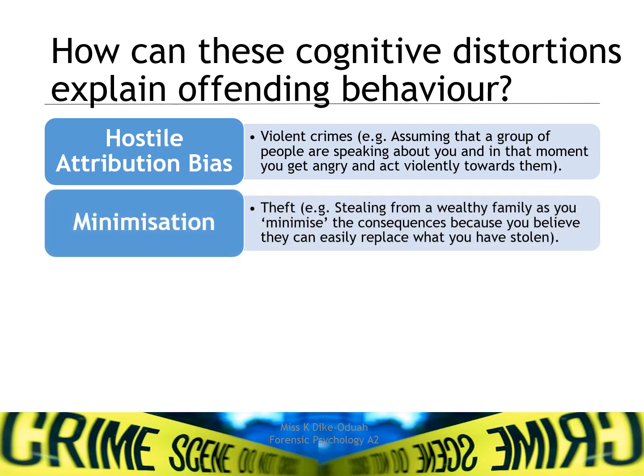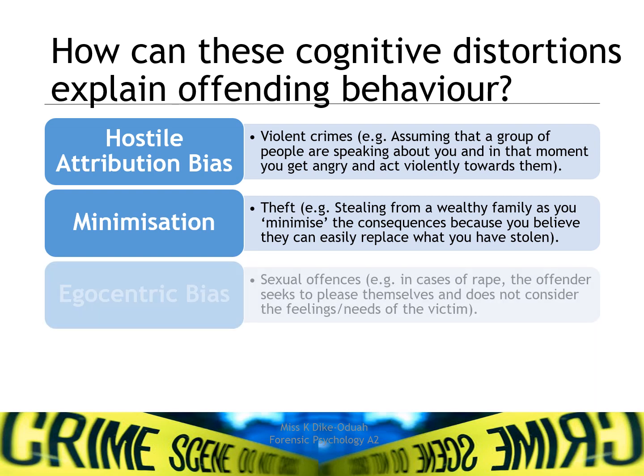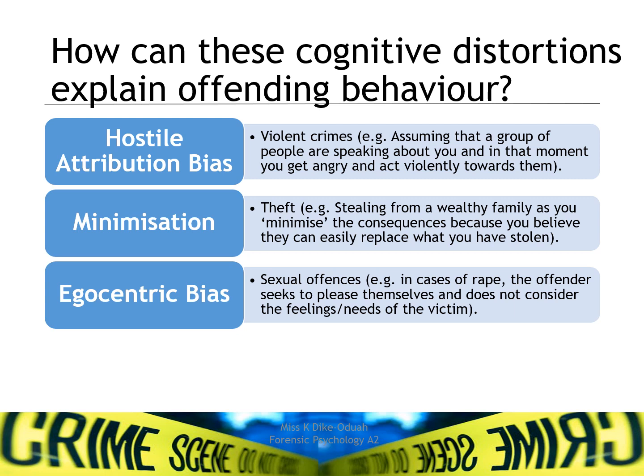With minimisation, stealing from a wealthy family can be explained because the offender minimises the consequences, believing they can easily replace what has been stolen. Ego-centric bias can often explain sexual offences whereby the individual seeks to please themselves and doesn't consider the feelings, needs, or consent of the victim.